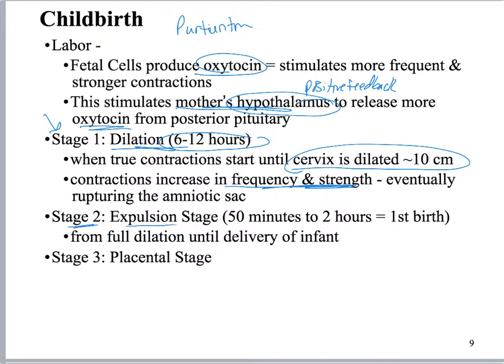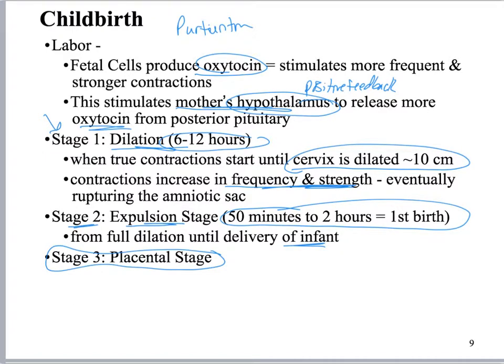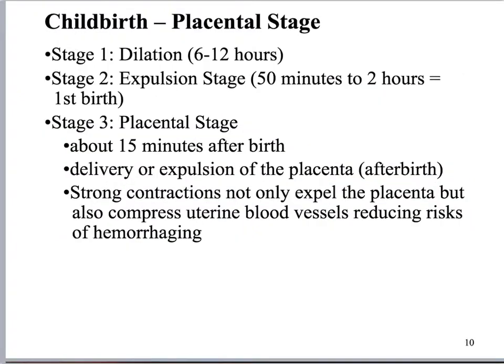Stage two is the expulsion stage. This should take 50 minutes to two hours for the first birth — it can take longer or be shorter — and this is where you're actually delivering the fetus. Then the placental stage is where you go through this all over again, but much faster, to deliver the placenta. Contractions cut off the blood supply to the placenta, the arteries break away, it starts to separate from the uterine wall and can be delivered. That whole placental stage takes about 15 minutes, with very strong contractions.